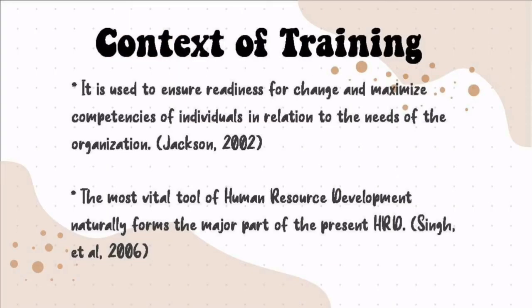Let me present the different contexts of training. The first context is used to ensure readiness for change and maximize competencies of individuals in relation to the needs of the organization. It also comes with the determination of the most appropriate way to make the transfer of skills more effective. The place of the training function should be at the center of the strategic management process in order to facilitate change by translating the values and direction of the organization into a strategic human resource strategy.